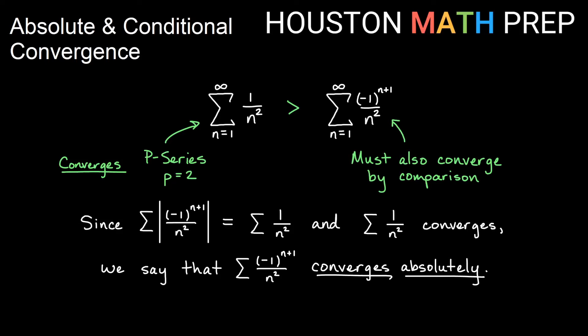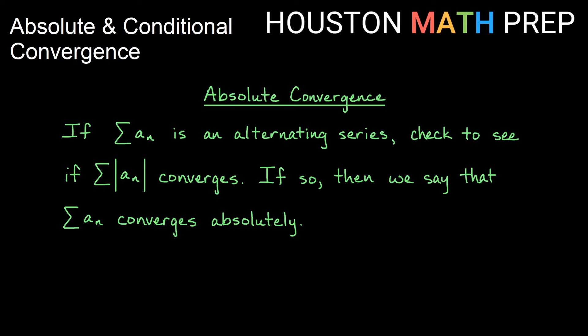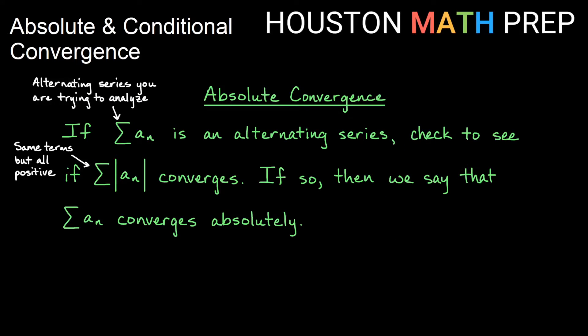This is called absolute convergence. So if we're checking for absolute convergence, we take the alternating series we're trying to analyze, look at the same terms but imagine they're all positive — the absolute value of all the terms — and check if that converges. If so, then we say our original alternating series converges absolutely.